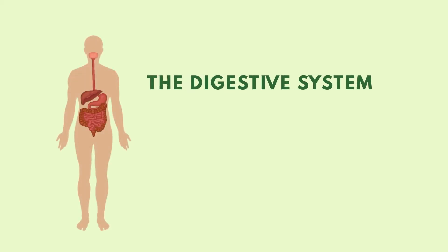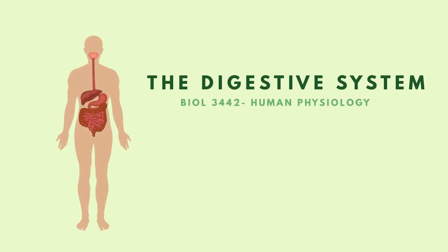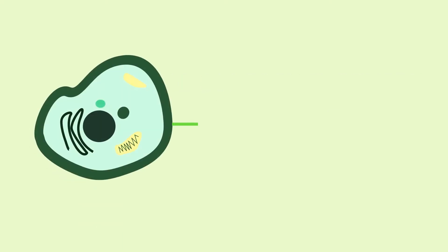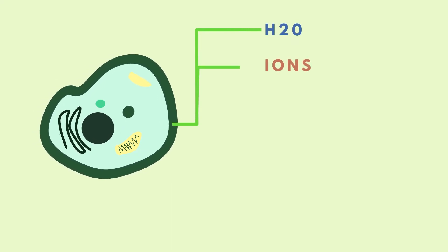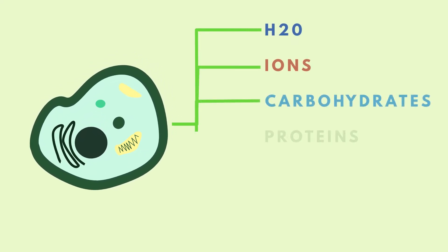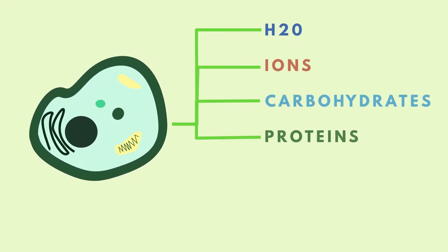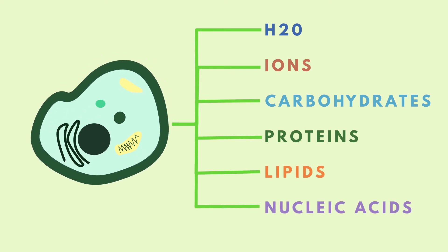Every living thing on Earth is made of a collection of different cells, all of which work together for survival. All cells are made of molecules, such as water, ions, carbohydrates, proteins, lipids, and nucleic acids.